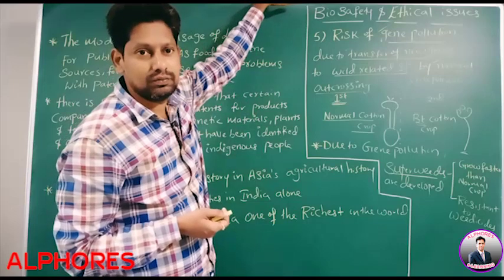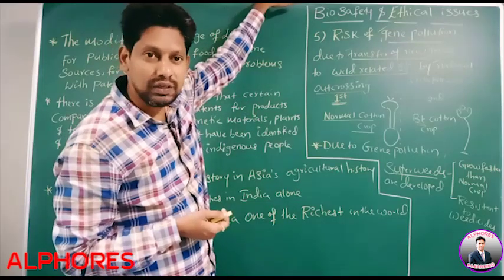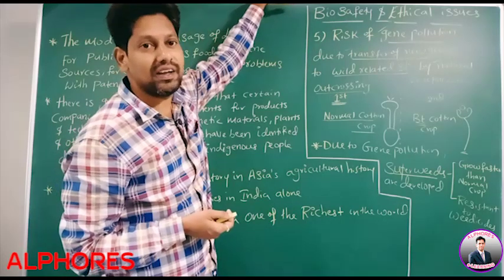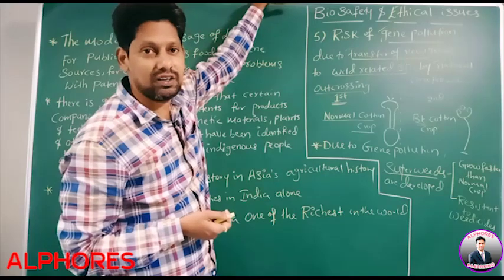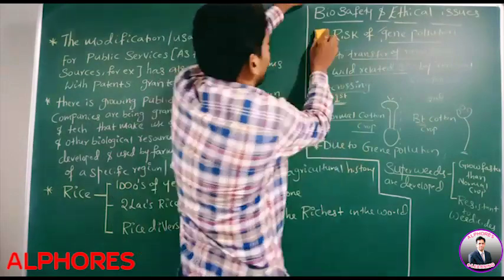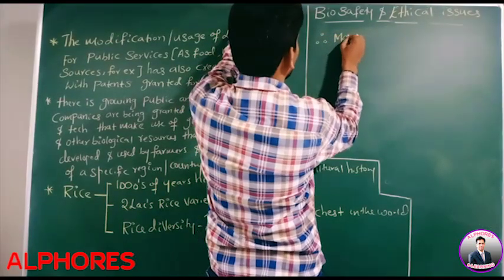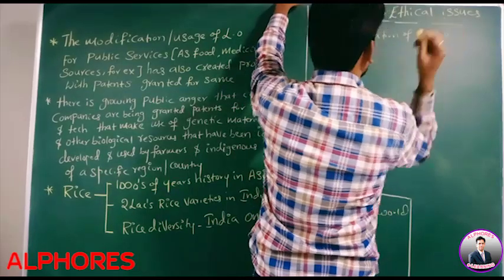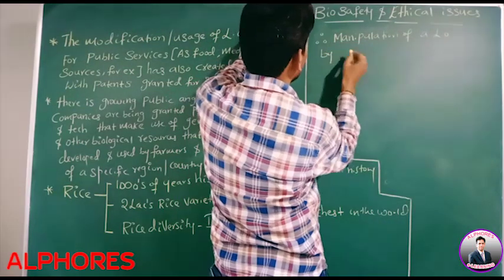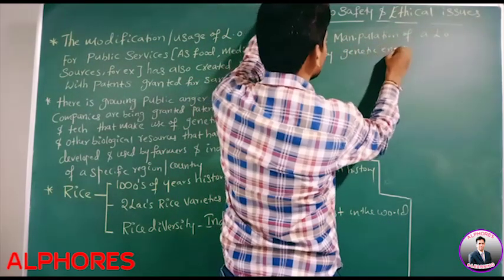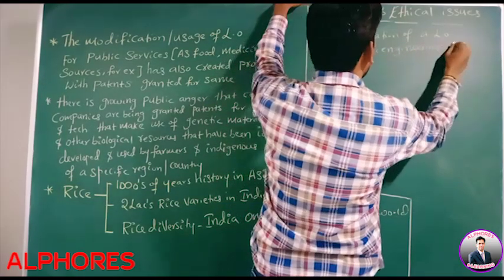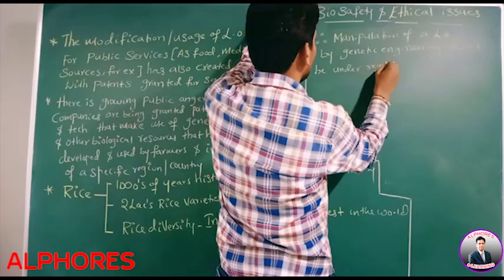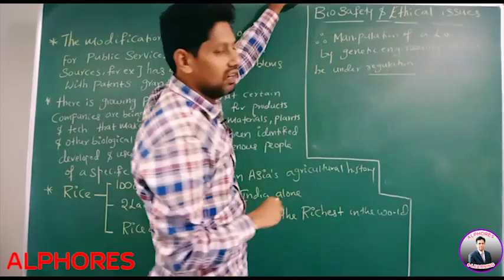Therefore, manipulation of a living organism by genetic engineering should be under control of regulations. It means living organisms should be regulated by the genetic engineering process with some regulations.